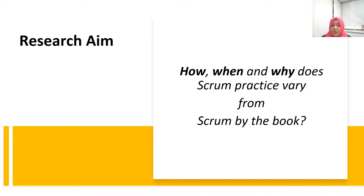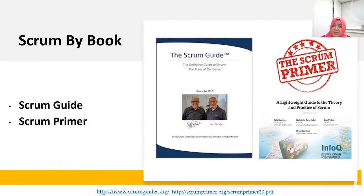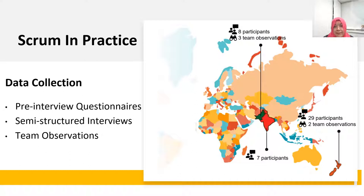This study is guided by a research question of how, when, and why does Scrum practice deviate from Scrum by the Book. To study this, we collected data from two main sources. We used the Scrum Guide and Scrum Primer to understand what is described in Scrum by the Book — these are the formative Scrum resources commonly acknowledged and referred to in research studies. To understand what occurs in practice, we collected data through pre-interview questionnaires, semi-structured interviews, and team observations.